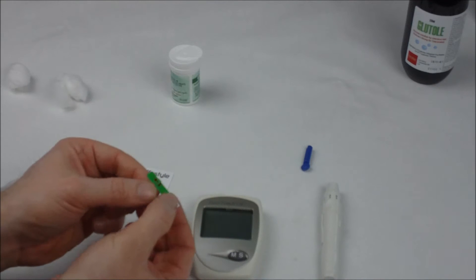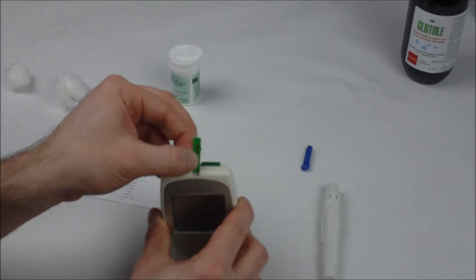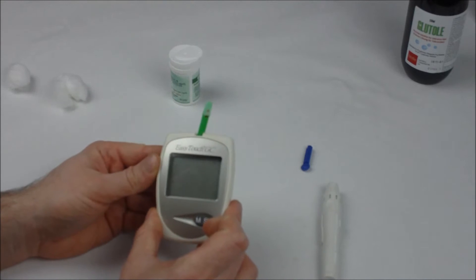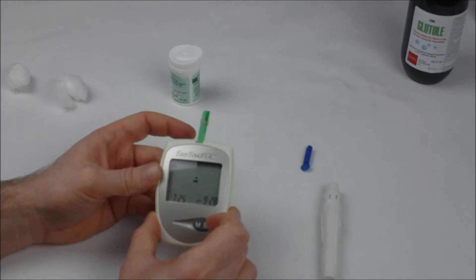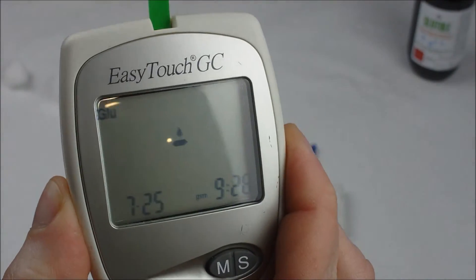Take a test strip and insert that barcode into the slot at the top of the monitor. Monitor will come to life and you will see it starts displaying the blood drop icon.